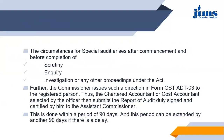The circumstances for special audit arise after commencement and before completion of scrutiny, inquiry, investigation or any other proceedings under the act. If during inspection or investigation any discrepancy was found between the information disclosed and the actual transactions, the special audit can be conducted. The commissioner issues such a direction in form GST ADT-03 to the registered person. For previous audits it was form GST ADT-01 and 02; for special audit it is GST ADT-03.